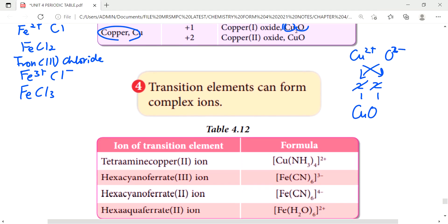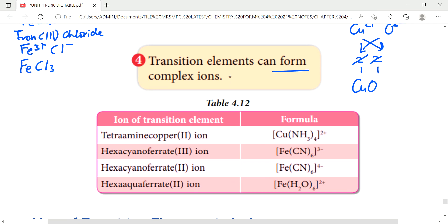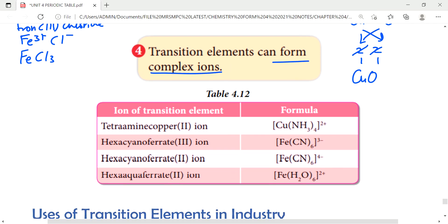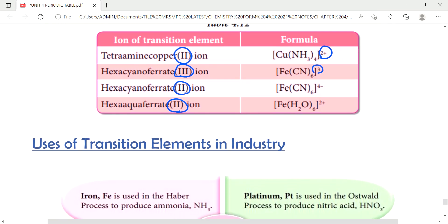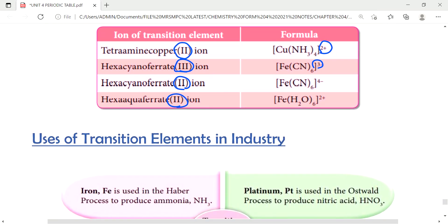Next is transitions element can form complex ions. Complex ions are complicated like this. Tetraamine copper II ion. The 2 referring to the charge, look here 2 plus. Hexacyanoferrate III is 3 minus. So that's all for the special characteristics for transitions elements.